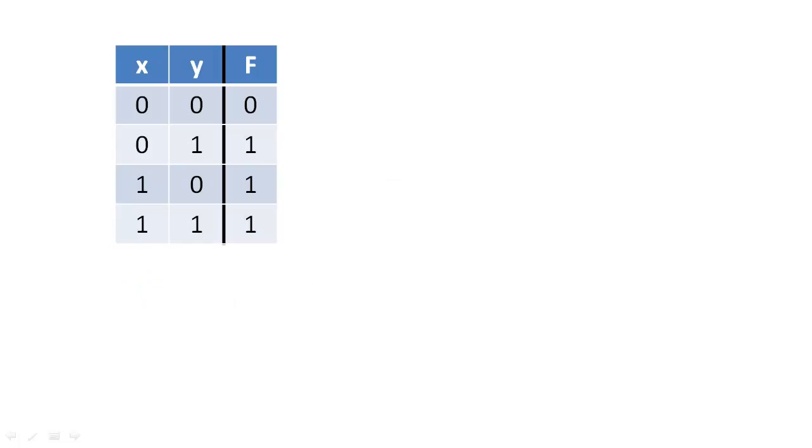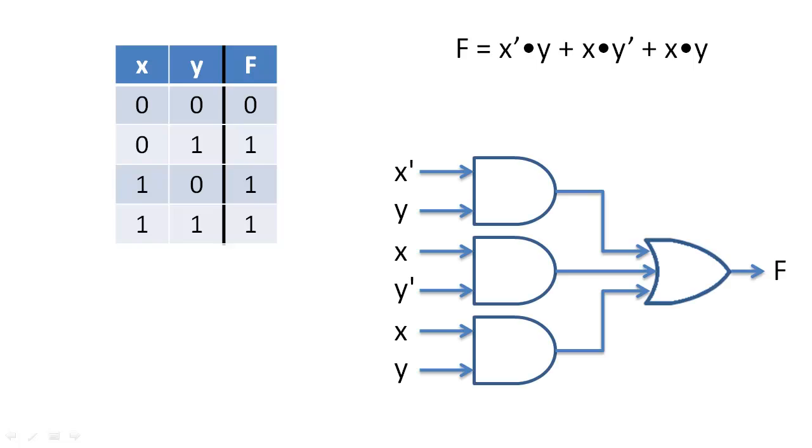Let's consider this truth table. There are two ways to create a Boolean expression from this truth table. The first method is to OR the minterms together, just like we did. This method would yield a fairly large, complex circuit.